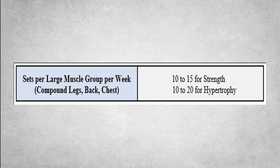Moving on to the variable of sets per muscle group per week. For general and special populations, I like to break it down further into sets per large muscle group per week, meaning compound leg, back, and chest exercises. For legs, I'm talking about squats, deadlifts, hip thrusts, and multi-directional lunges, and also leg press. For back, I'm just talking about rowing exercises. And for chest, I'm talking about horizontal pressing exercises like push-ups, barbell, or dumbbell chest press. The reason why I don't include smaller muscle groups like shoulders and calves for general and special populations is because if you're hitting a minimum of 10 sets per muscle group per week for your large compound movements, then by default you're doing the same for your smaller muscle groups.